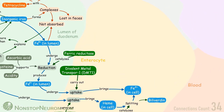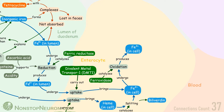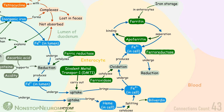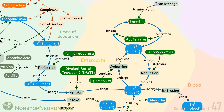From here, ferrous iron has two routes to go. The first one is oxidation by ferroxidase to form ferric iron, which in turn binds with apoferritin to form ferritin. Ferritin in the enterocyte is part of iron storage in the body. When needed, ferritin frees up ferric iron, which in turn is reduced by ferroreductase to regenerate ferrous iron. The other route is extrusion into the blood, carried out by ferroportin present on the basolateral side of the enterocyte.